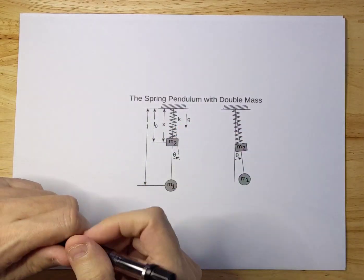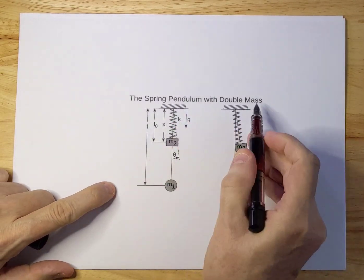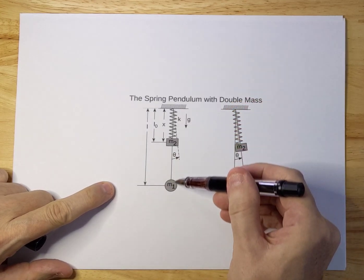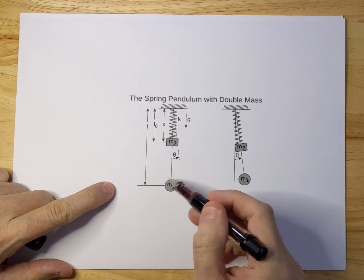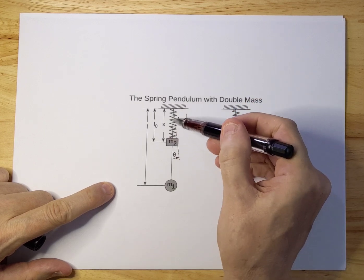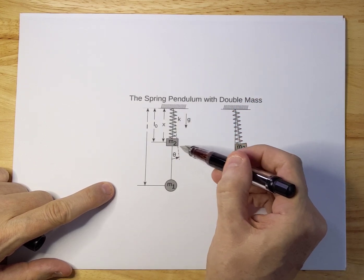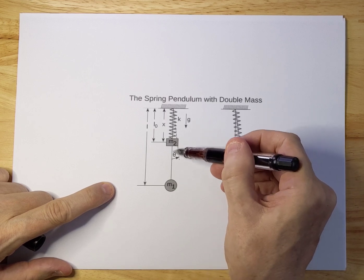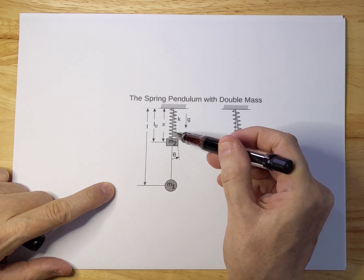Today I'm going to talk about the spring pendulum with double mass. There's a normal pendulum with a mass M1 and on the shaft of the pendulum there's a spring and an extra mass and that mass can move up and down along the shaft.